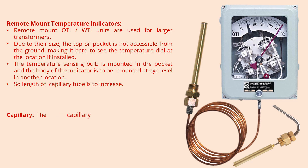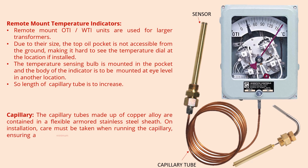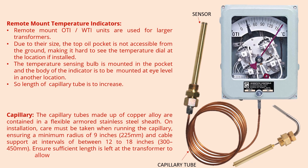The capillary tubes, made up of copper alloy, are contained in a flexible armoured stainless steel sheath. On installation, care must be taken when running the capillary, ensuring a minimum radius of 9 inches (225 mm) and cable support at intervals of between 12–18 inches (300–450 mm). Ensure sufficient length is left at the transformer to allow the valve to be freely installed and removed.